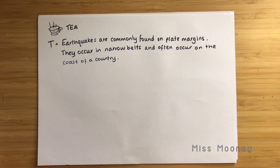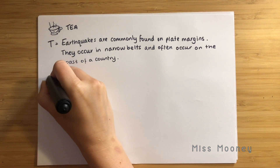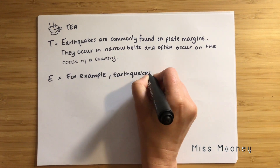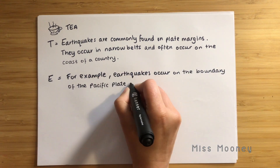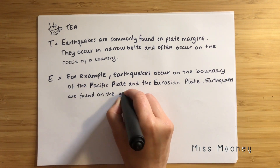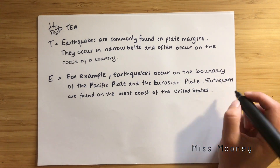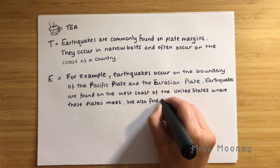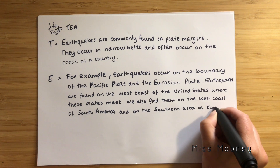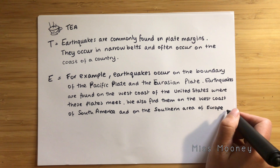Next up we need examples — evidence to prove we haven't just made this up — so let's add in some named places. For example, earthquakes occur on the boundary of the Pacific Plate and the Eurasian Plate. Earthquakes are found on the west coast of the United States where these plates meet. We also find them on the west coast of South America and on the southern area of Europe. Remember all place names need a capital letter — that includes oceans and plate names. It's really easy to forget capital letters so go back and correct these if you've forgotten them.